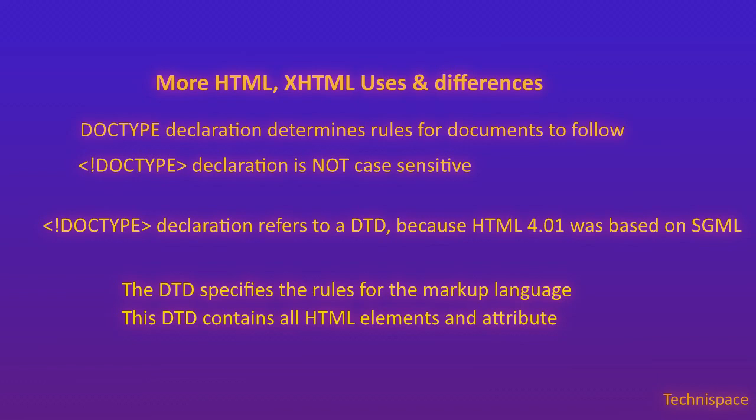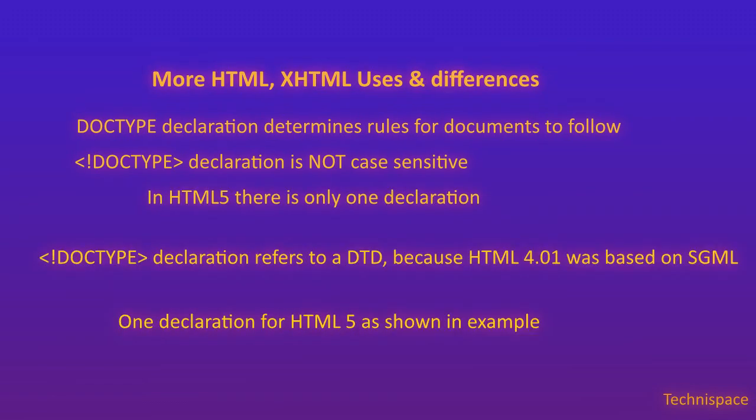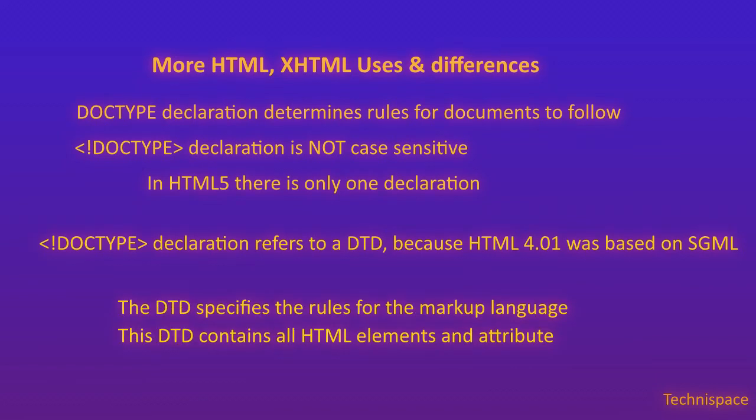XHTML is supported by all major browsers. In XHTML, the DOCTYPE declaration determines the rules for documents to follow. There are three different DOCTYPE declarations in HTML 4.01, but in HTML5 there is only one. In HTML 4.01, the DOCTYPE declaration refers to a DTD because HTML 4.01 was based on SGML. The DTD specifies the rules for the markup language so that browsers render content correctly.